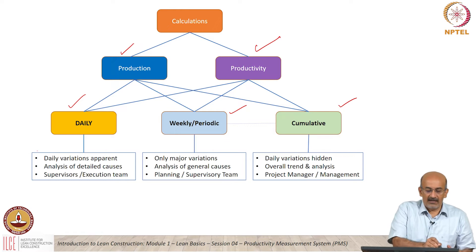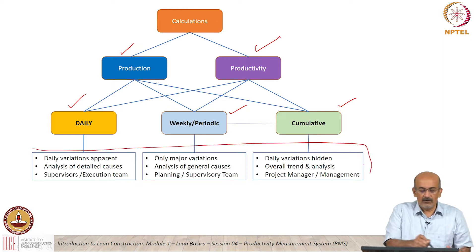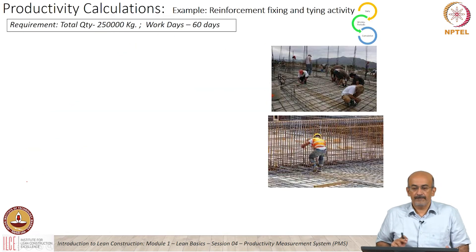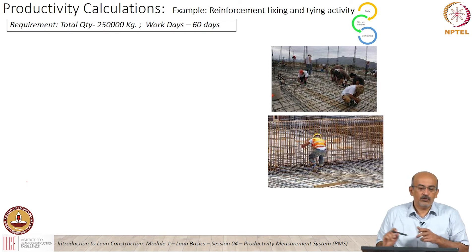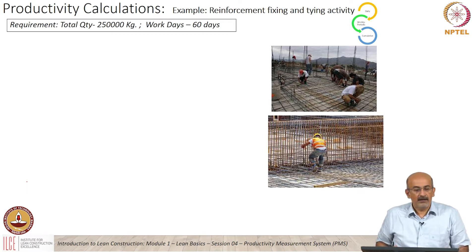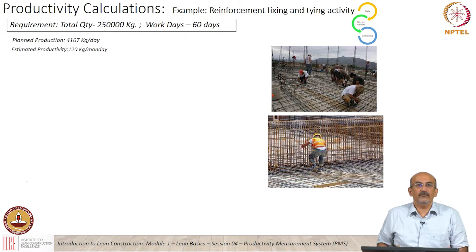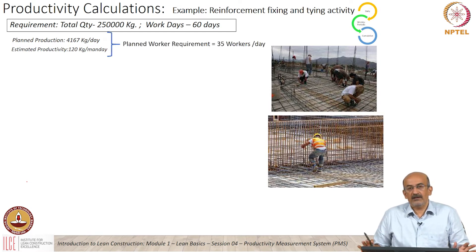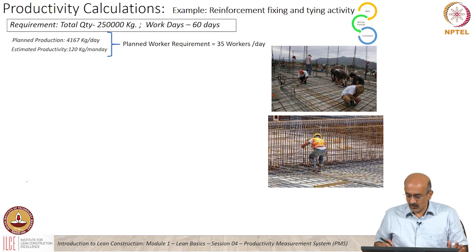We will come to understanding what is in the text after we look at the different reporting formats. Let us take an example: a reinforcement activity where the total requirement is 250,000 kgs in 60 work days. This translates into a planned production of 6,147 kgs a day and an estimated productivity of 120 kgs per man-day, which translates to a planned worker requirement of 35 workers per day. This is the overall macro-level view.